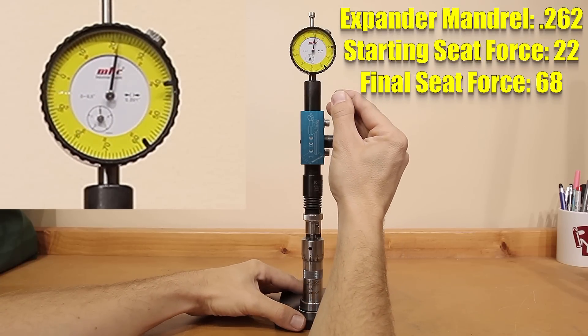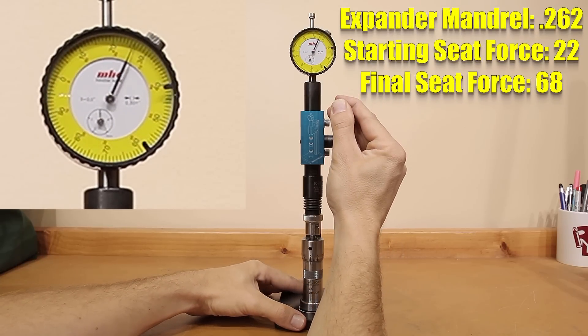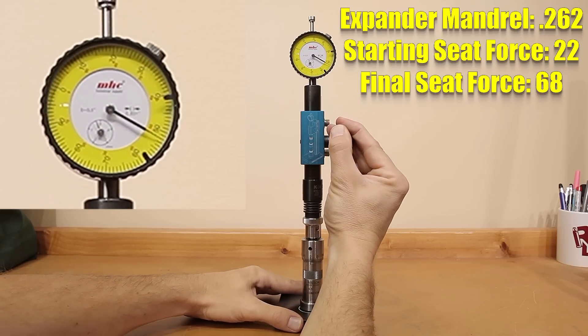Moving on to the 0.262 mandrel, our starting force was down at 22 pounds again, but our final seating force was 68 pounds.